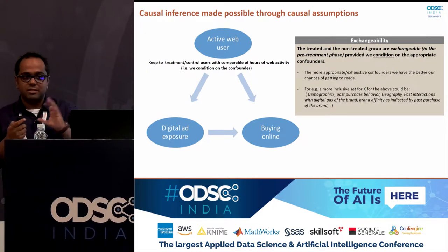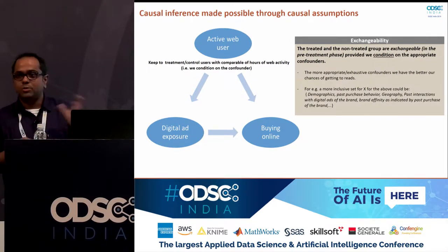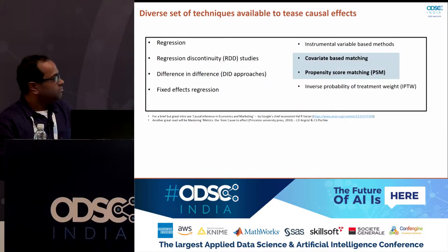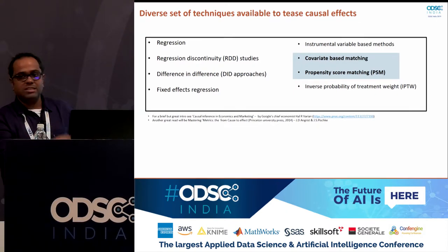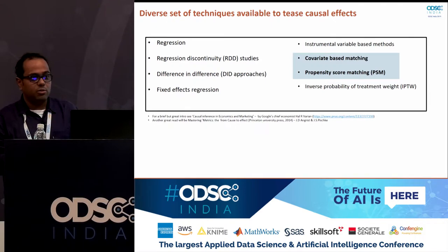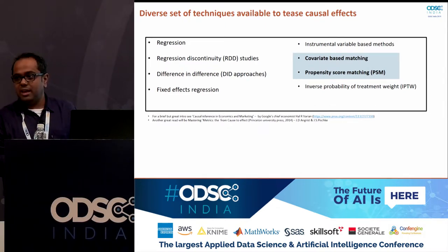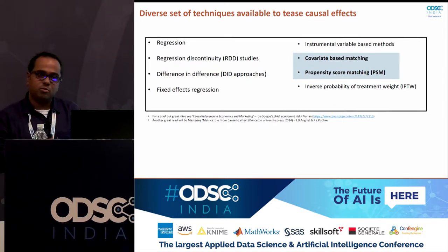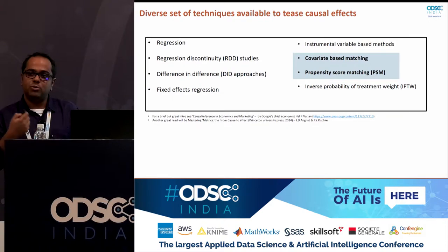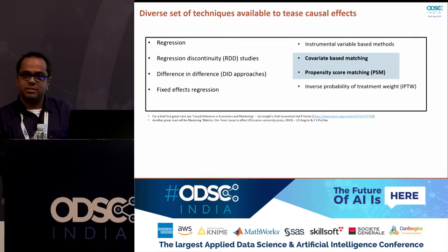There could be many confounders — gender, geographical location, propensity for the brand, and so on. The more exhaustive your list of confounders, the more your chances of satisfying such assumptions and getting to more robust causal reads. Such causal principles are brought to life by different techniques; I will focus on two connected techniques called covariate-based matching and propensity-based matching, and cover them through a simulated case study.